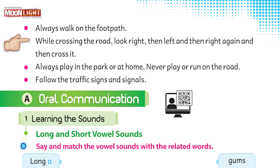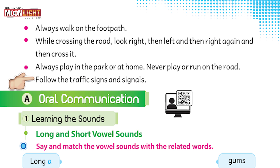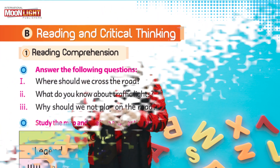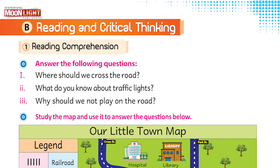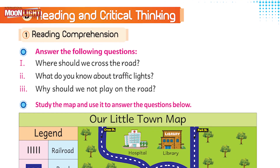Always play in the park or at home — never play or run on the road. Last rule: follow the traffic signs and signals. I hope students that you have all understood the road safety rules. Now it's time to think critically and give the answers to the questions being asked in the book.